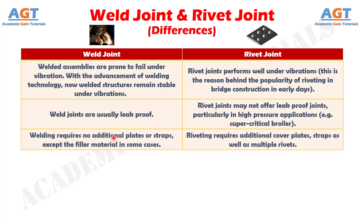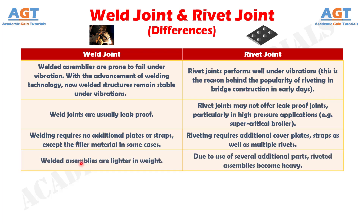Number 8: welding requires no additional plates or straps, except the filler material in some cases, whereas riveting requires additional cover plates, straps as well as multiple rivets. Number 9: welded assemblies are lighter in weight, whereas due to use of several additional parts, riveted assemblies become heavy.